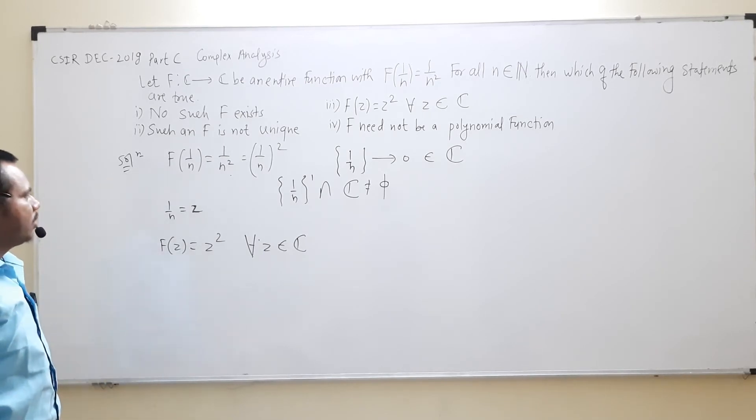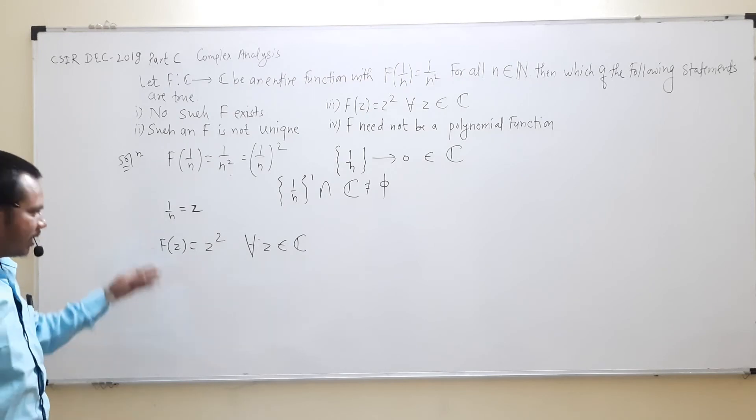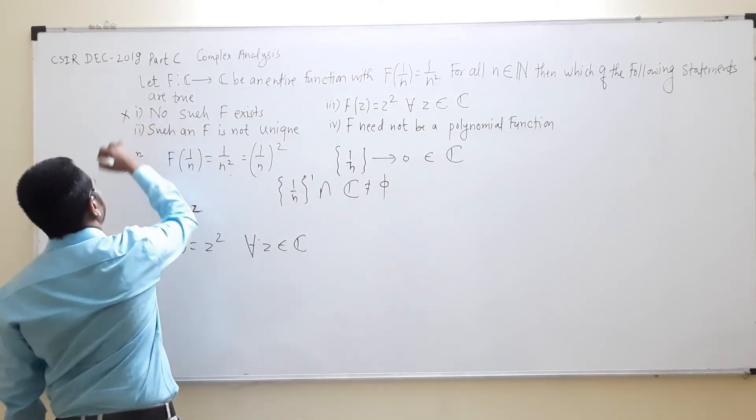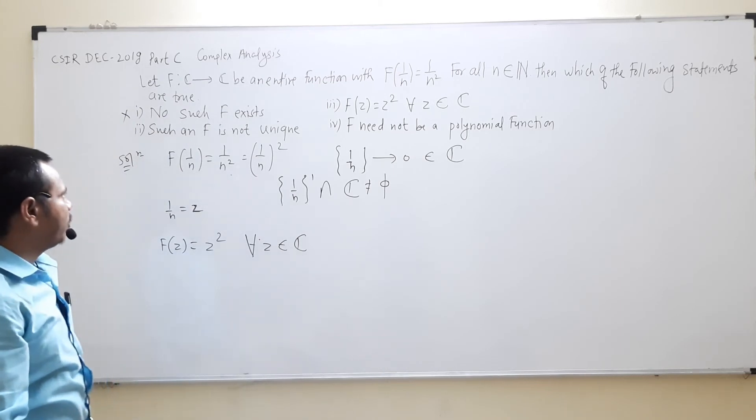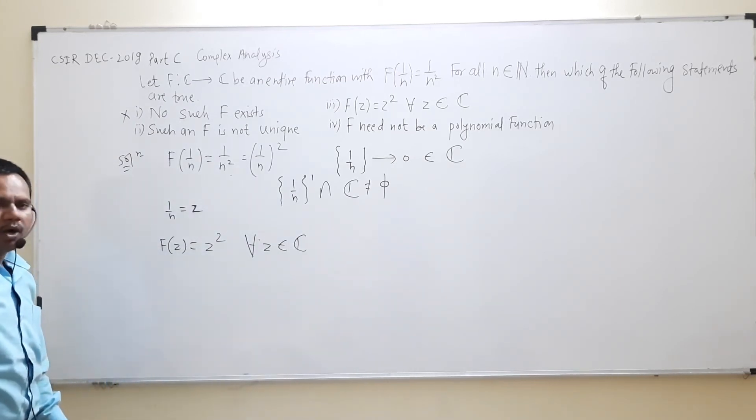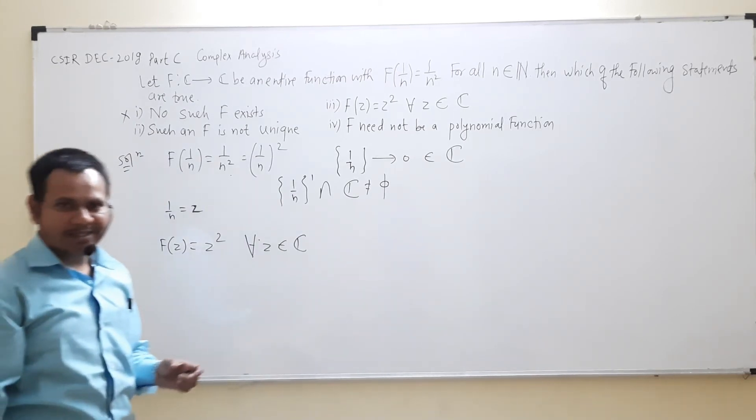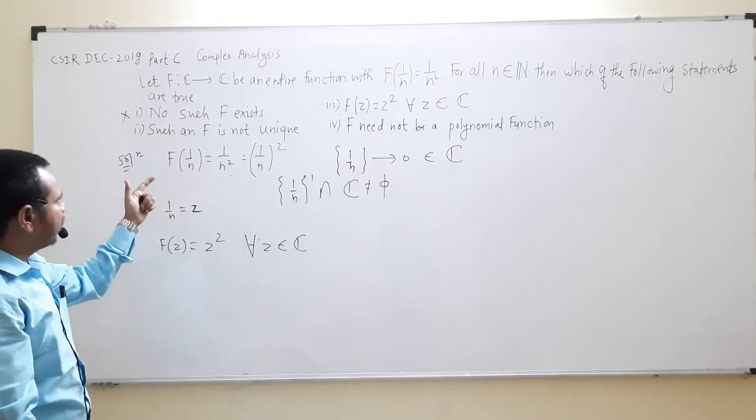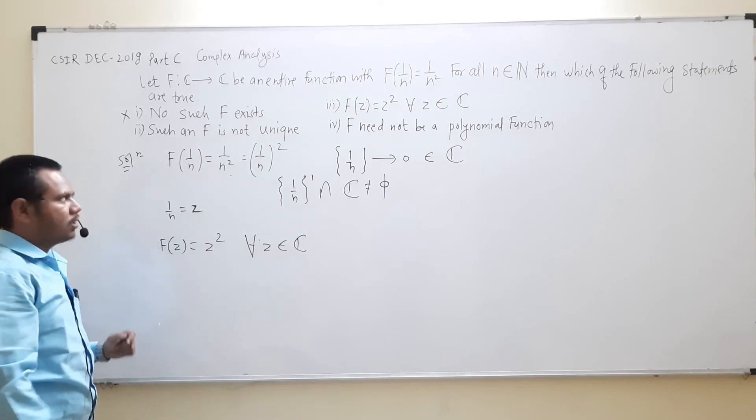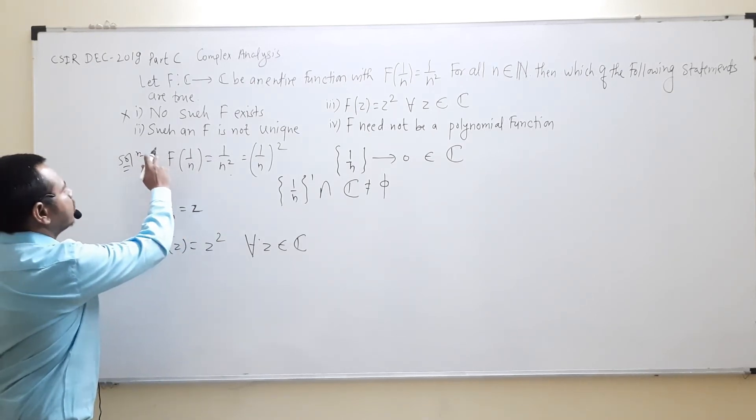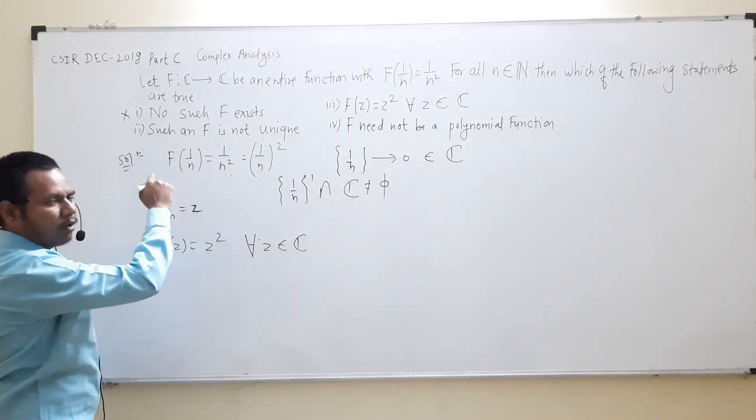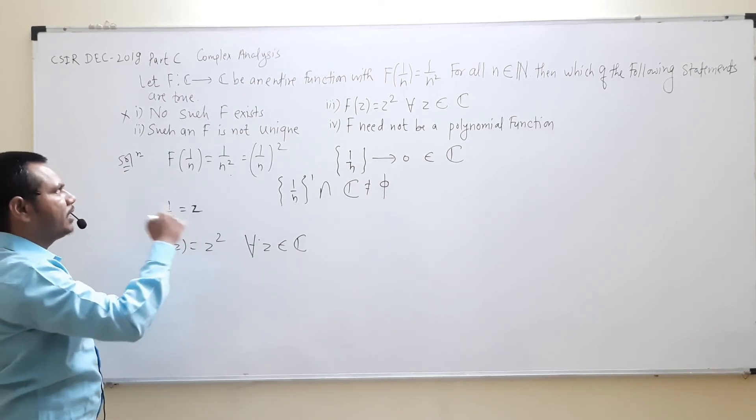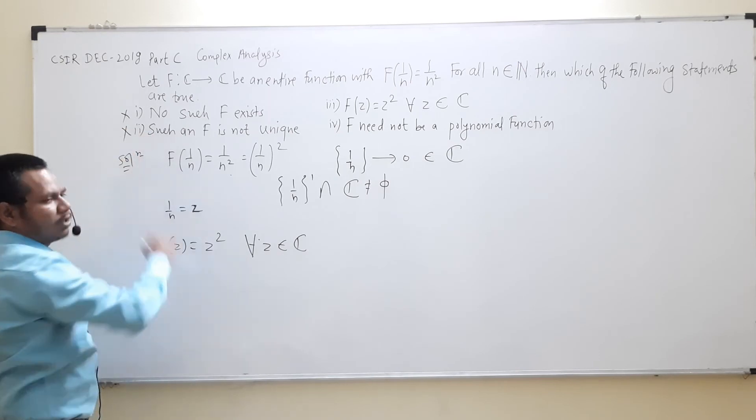Now first option: no such function f exists. Here we are getting a function, that's why this first option is wrong. Now the second option: such an f is not unique. By uniqueness theorem, there exists a unique analytic function. Here we are getting unique function. The option is saying that such an f is not unique, but we are getting unique. Hence this option is wrong.